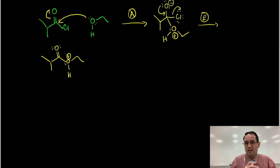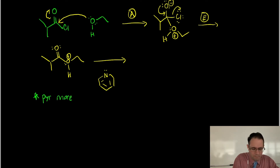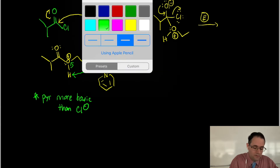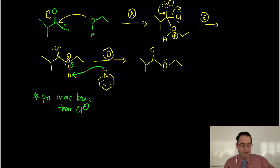Here's where we want to use pyridine as the base. You might ask why not use chloride - pyridine is more basic. Pyridine does the deprotonating here to give the ester product. That's D for deprotonation. So: attack, eliminate, then deprotonate - those are the three steps for an alcohol reacting with an acid chloride.